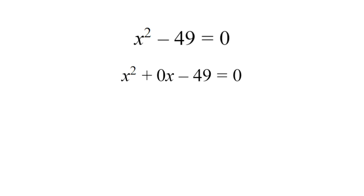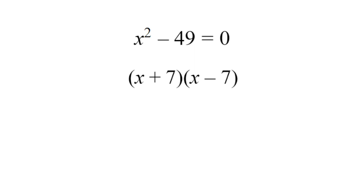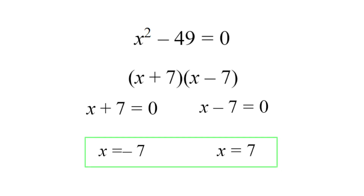This is known as a difference of squares. 49 is a perfect square and x squared is a square. What number squared gives us 49? That's 7. So 7 plus negative 7 equals 0, and 7 times negative 7 equals negative 49. We rewrite this with factors (x plus 7) times (x minus 7). All you have to do is take a plus and minus of the square root of c. Setting each factor equal to zero, our solutions are x equals negative 7 and x equals 7.